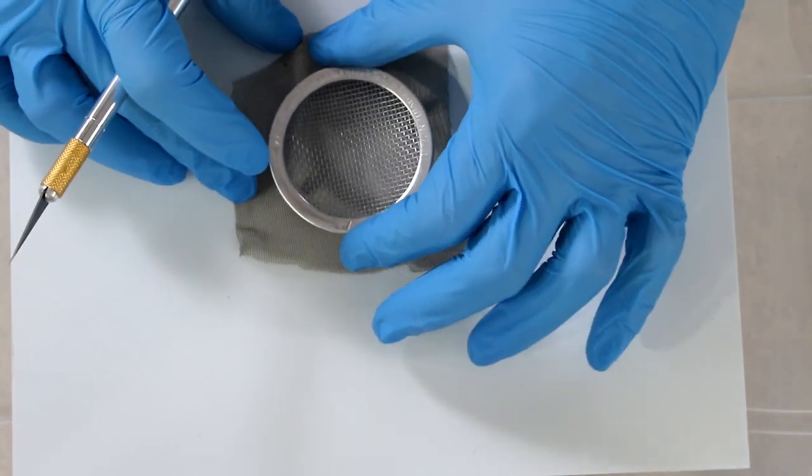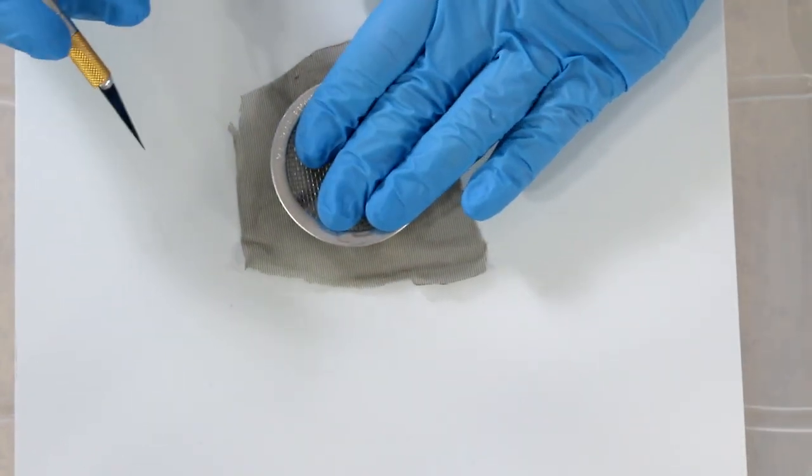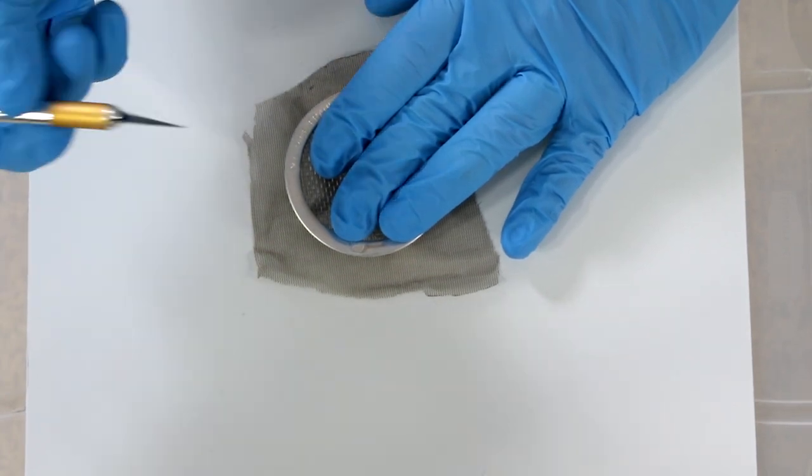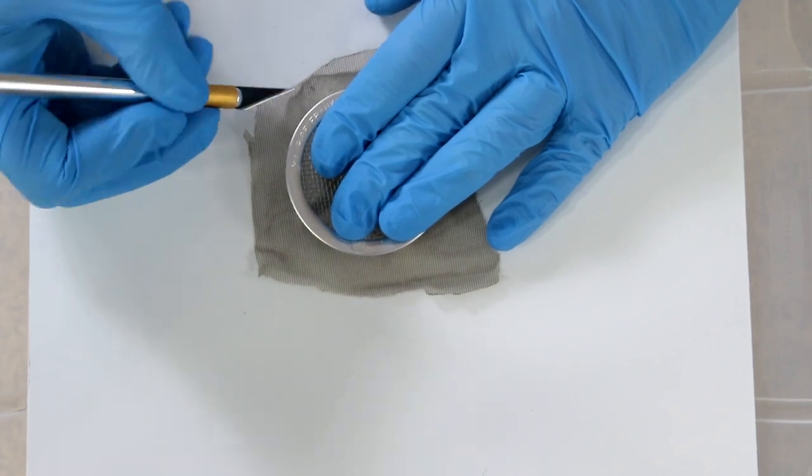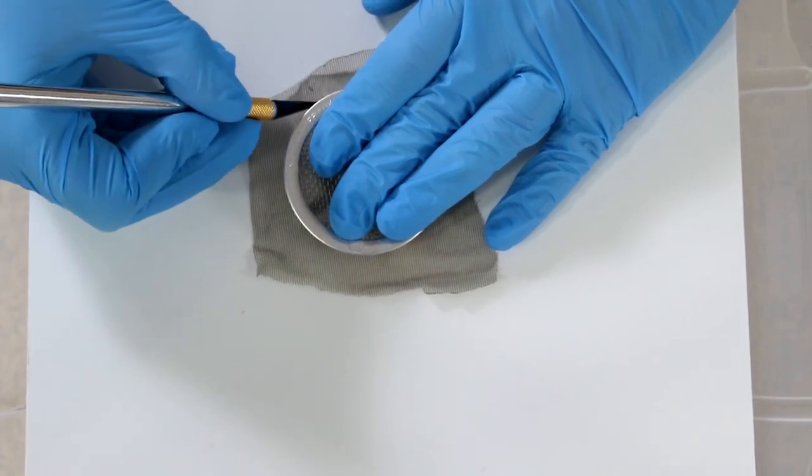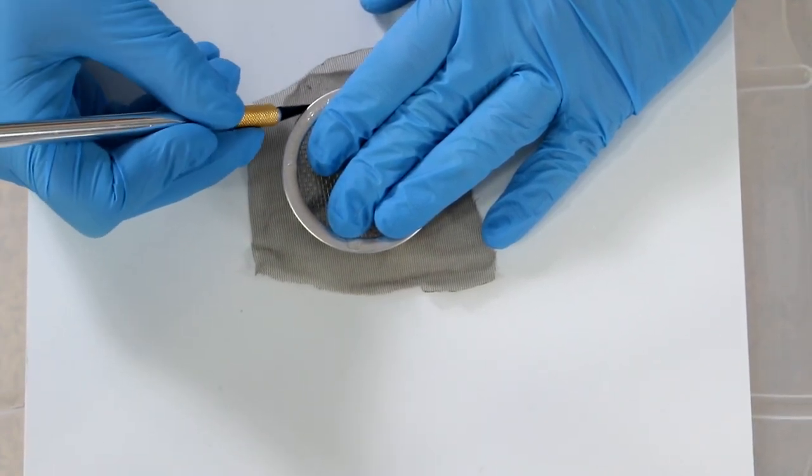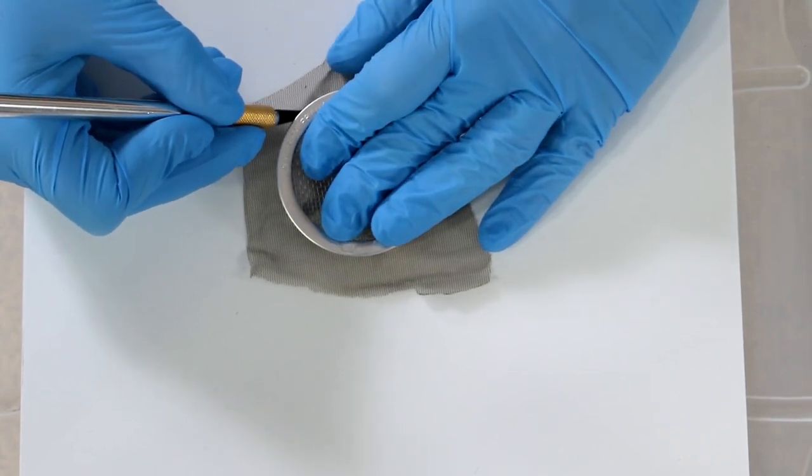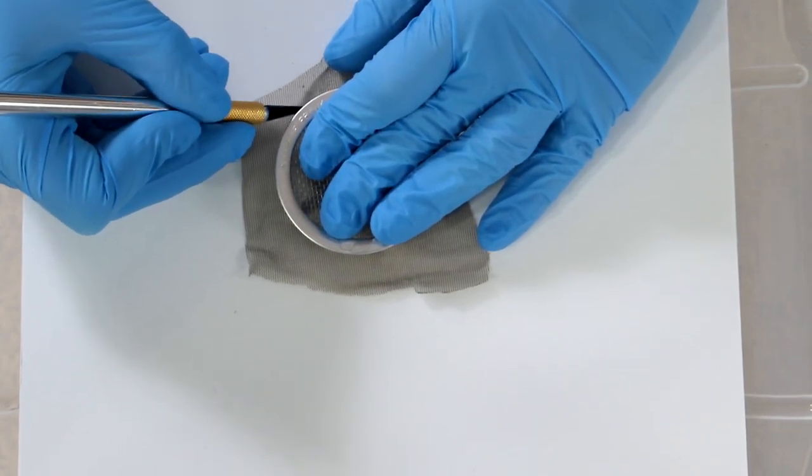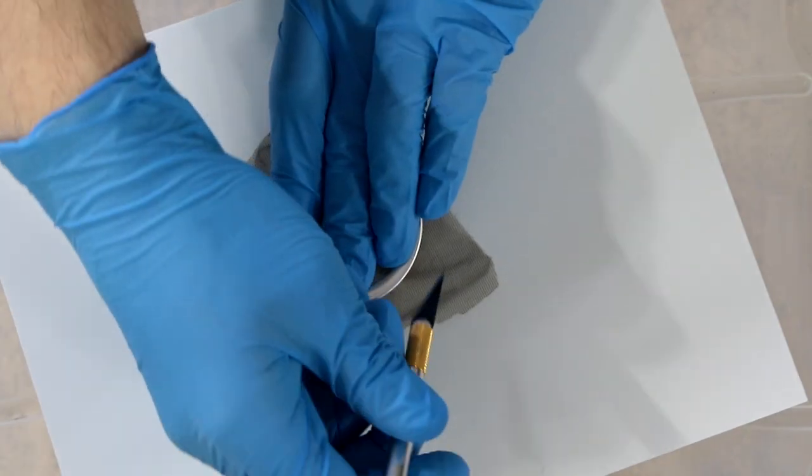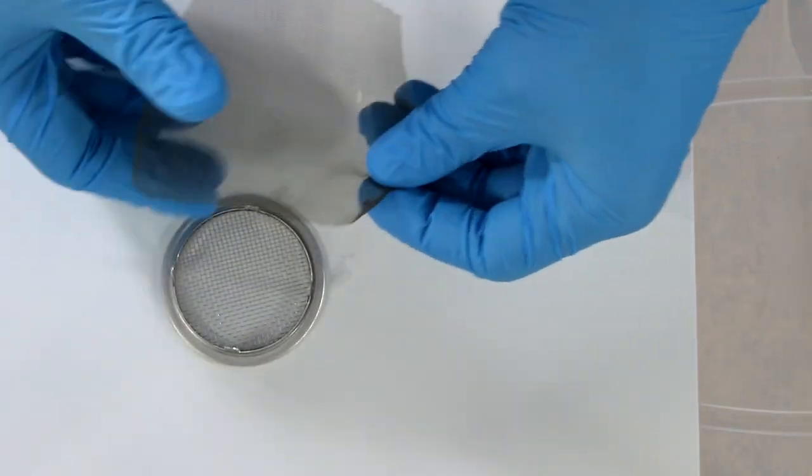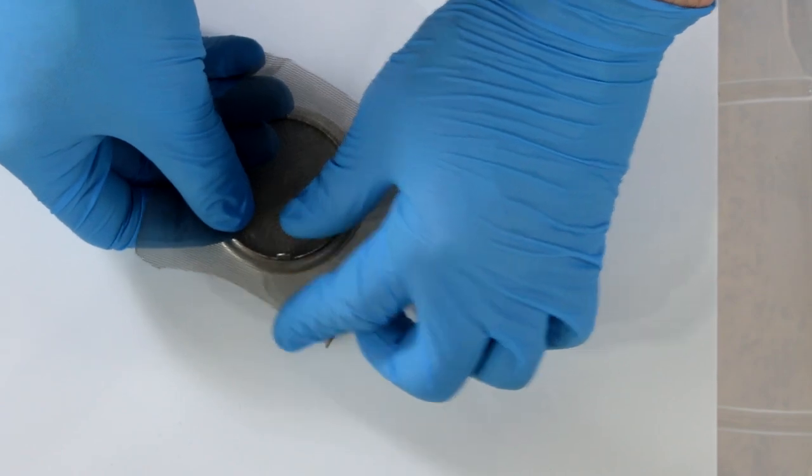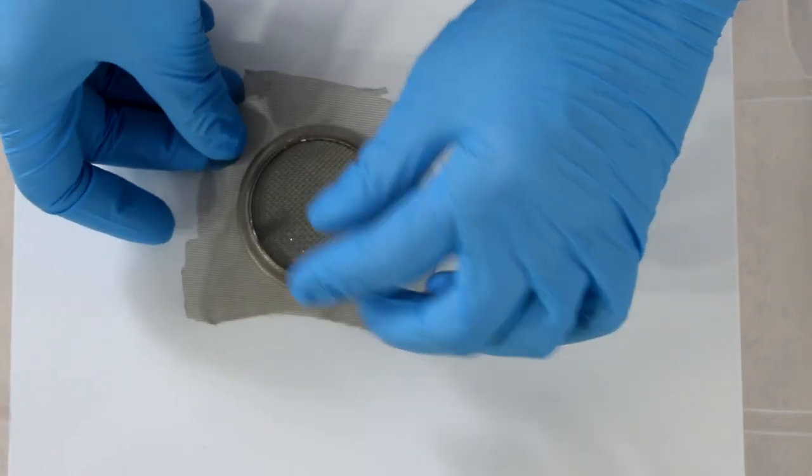I'm going to hold the ventilation screen firmly against the mesh and take an extremely sharp exacto knife. I'm going to go underneath and you can't see it in the video, but I'm going to make a little slit where each of the tabs is on the ventilation screen. Now I have the slits in the mesh and I can slide these over the tabs.